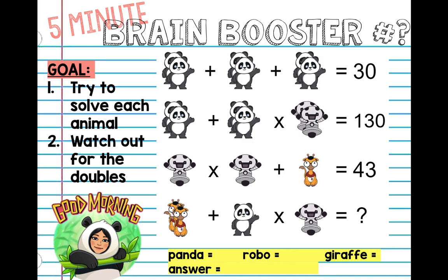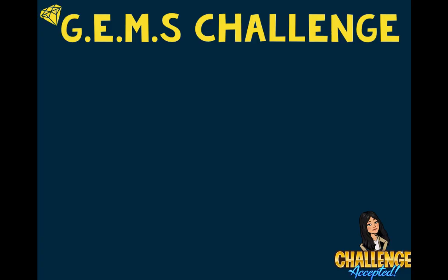Okay, so I hope you guys solved it. For Panda, what'd you get? Panda is 5. Next we have Robo — 10 times what plus 10 is 130, we got 12, so one Robo is 6. For Giraffe, 36 plus what is 43? That's 7. So our equation is 14 plus 5 times 6, which is 30 plus 14, equals 44. Order of operations!